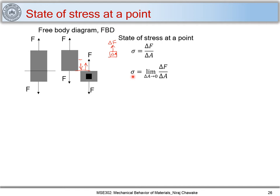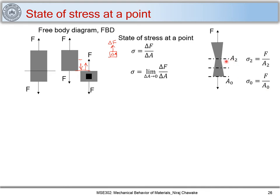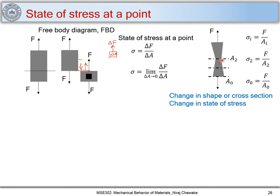Let's understand this with another example — a member with a variable cross-section area also subjected to tensile force F. We have area A₀ at one end and A₂ at the middle. The stress at each section is: sigma₀ = F/A₀ and sigma₂ = F/A₂. In general, sigma_i = F/A_i. As the area decreases, the stress increases.